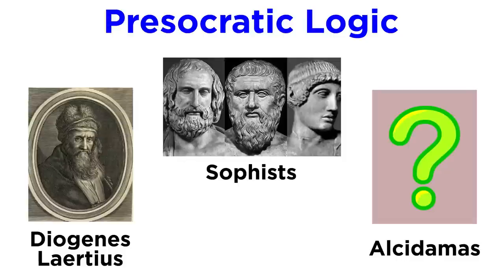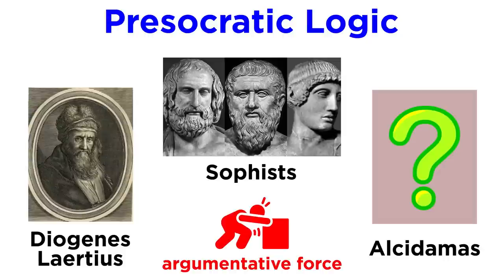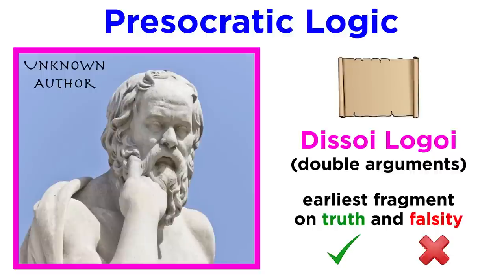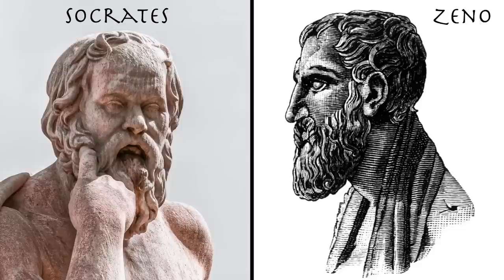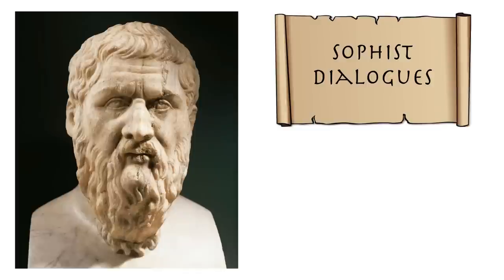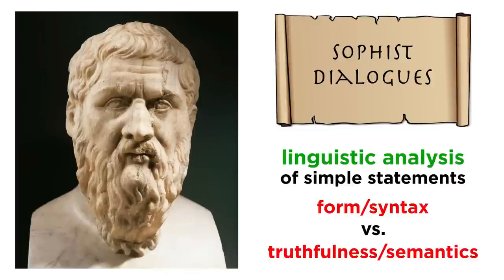Finally, the pre-Socratics also hinted at some early logical elements. The Sophists, as well as Diogenes Laertius and Alcidamus, categorized sentences relative to their argumentative force, while Antisthenes identified a truthful sentence as corresponding with the real world. An authorless text called Dissoi Logoi, or Double Arguments, from around 400 BCE, is possibly the earliest fragment on truth and falsity. Zeno and Socrates were also known for deliberately fallacious methods, however never explicitly aware of this format. Plato's formal categorization of this method as a dialectical argument was also akin to a prototypical logical analysis. In the Sophist dialogues, he likewise performs a linguistic analysis of simple statements and differentiates between their form or syntax and their truthfulness or semantics. Thus a statement can only be valid when it successfully specifies a subject and says something about it — a crucial separation within logic.